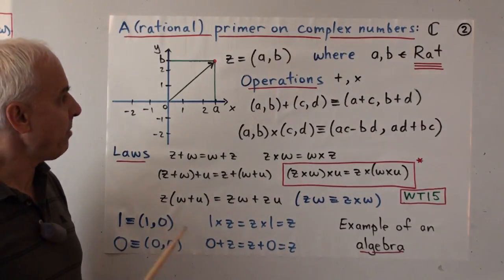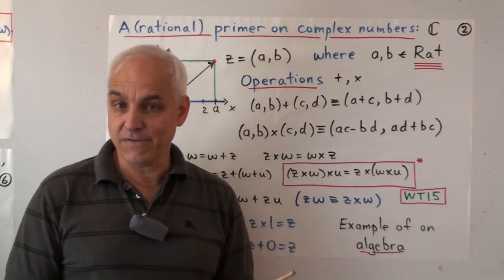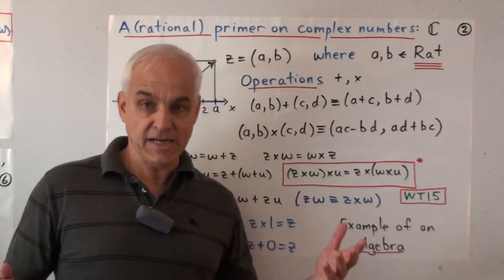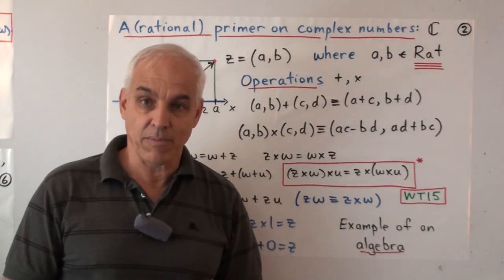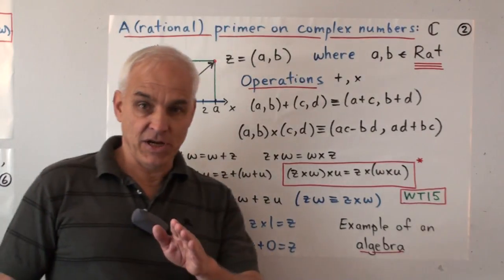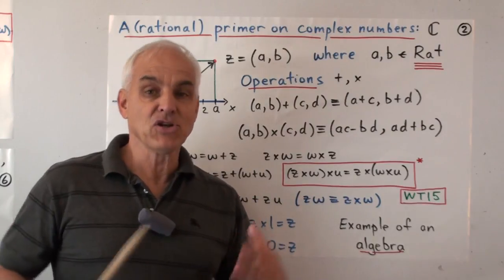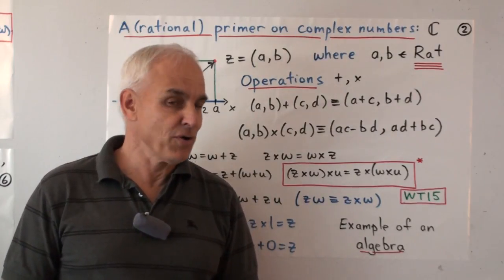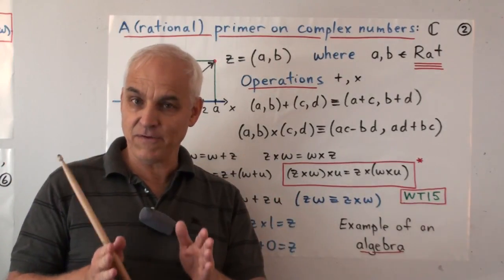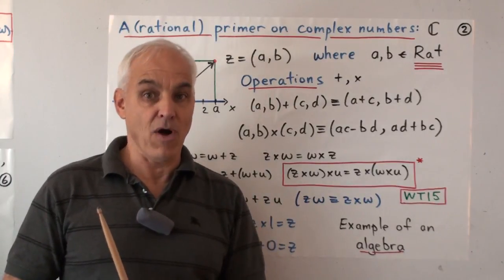We're starting with complex numbers, but I adopt a rational point of view because I don't believe in irrational numbers. It's not a religious position — it's just that I haven't seen any, and no one has actually shown me a proper irrational number. You might think that this diminishes one's mathematics, but it turns out it does exactly the opposite: it strengthens one's mathematics because one can then look carefully and logically at things which previously required waffling.